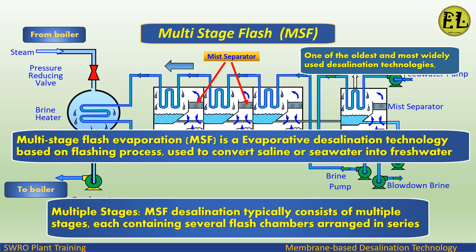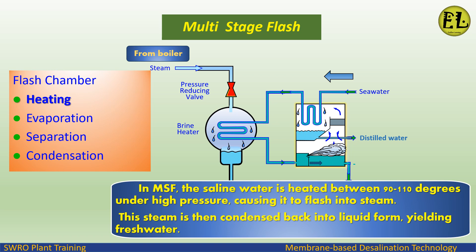Multi-stage flash evaporation (MSF) is an evaporative desalination technology based on the flashing process, used to convert saline or sea water into fresh water. MSF desalination typically consists of multiple stages, each containing several flash chambers arranged in series. It is one of the oldest and most widely used desalination technologies.